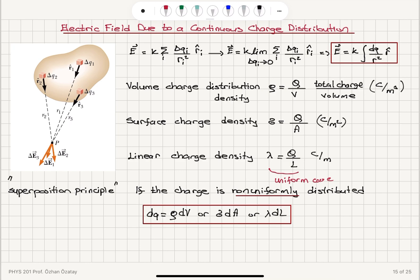Okay, so basically, we have used the superposition principle, calculate the electric field due to each charge element in the continuous charge distribution, add them up. In the limit, delta QI goes to zero, this summation turns into an integration, integral K DQ over R square R hat.